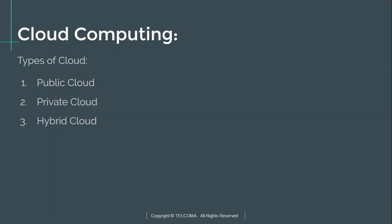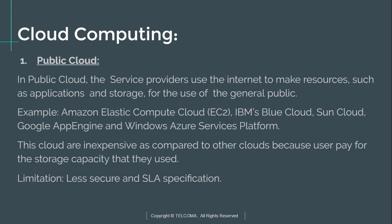The next topic is the types of cloud: public cloud, private cloud, and hybrid cloud. The public cloud is designed for the general public. The service provider uses the internet to make resources such as applications and storage available to the general public — for example, accessing the Google Play Store for applications and Google Drive for storage.